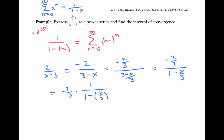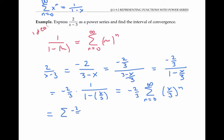Using the geometric sum formula, this is the same as negative two thirds times the sum from n equals zero to infinity of x over three to the n — I'm just plugging in x over three for x. Bringing negative two thirds into the summation and distributing the exponent gives x to the n over three to the n, which I can rewrite as negative two over three to the n plus one, times x to the n.